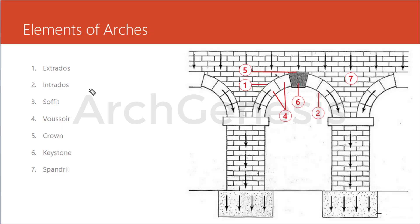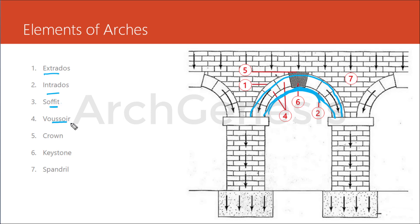Next are the elements of arches. Extrados is the outer curve of the arch. Intrados is the inner curve of the arch. Soffit is the inner surface of the arch. Voussoir is the wedge-shaped unit in the arch — all these blocks are voussoirs. Crown is the highest part of the extrados.